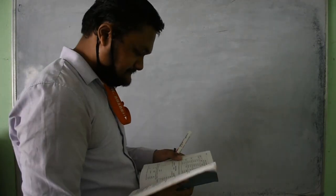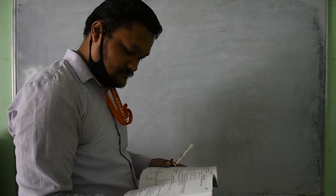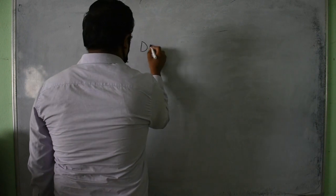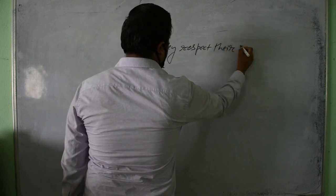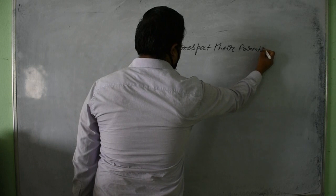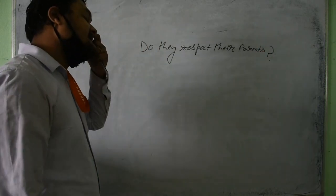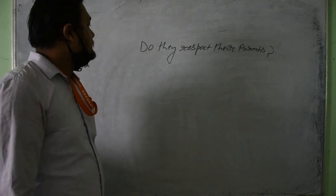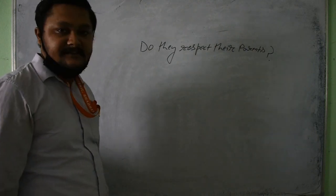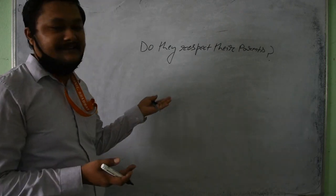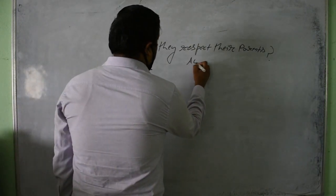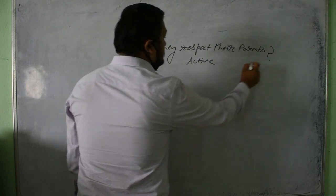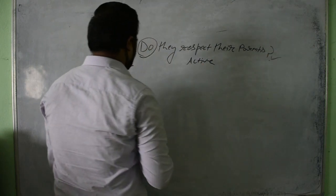Here is a question: 'Do they respect their parents?' This is a question in active voice — it may be posed to children asking whether they respect their parents. It is in active voice. The passive form will be: 'Are their parents respected by them?'